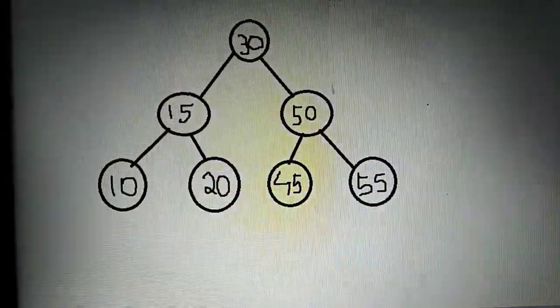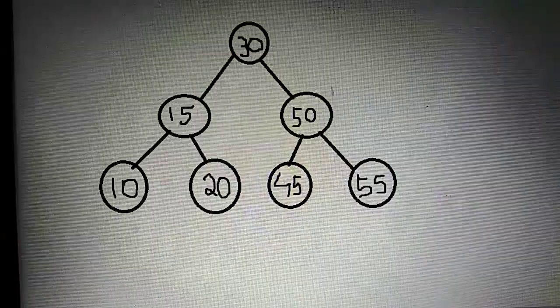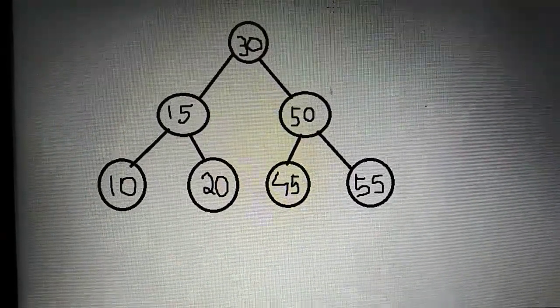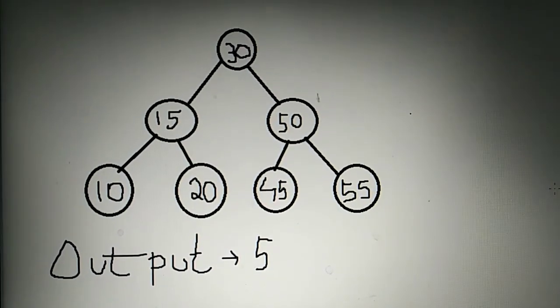you can see that 5 is the minimum difference of this binary search tree. So the output of this program will be 5. Now let's see the explanation of this code and how to solve this problem.